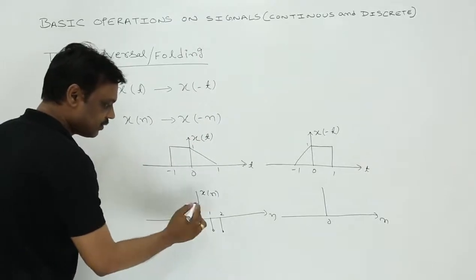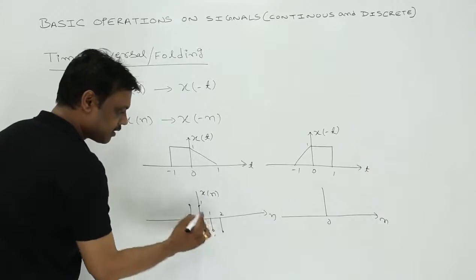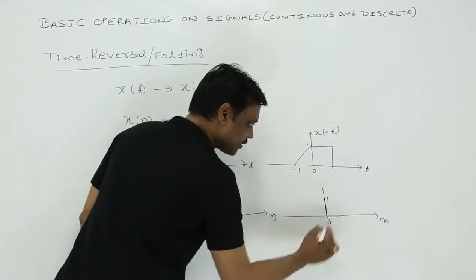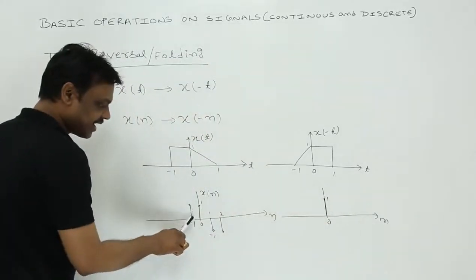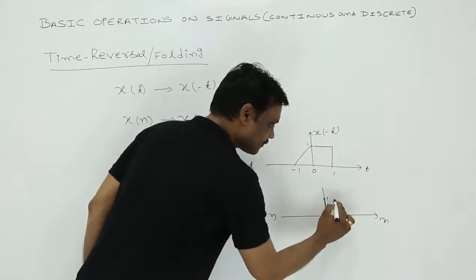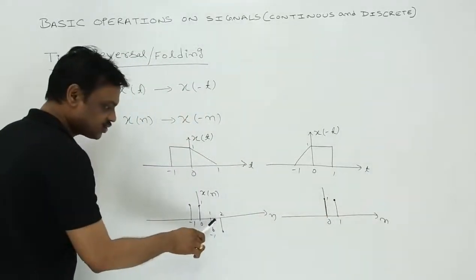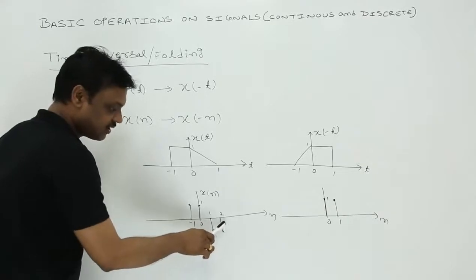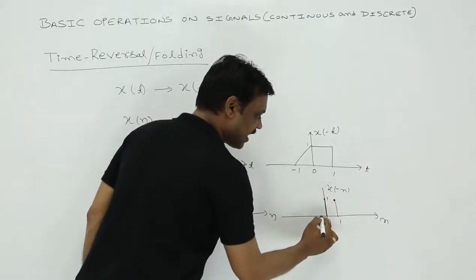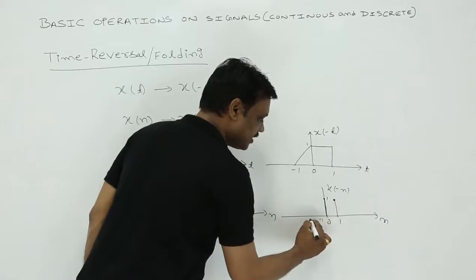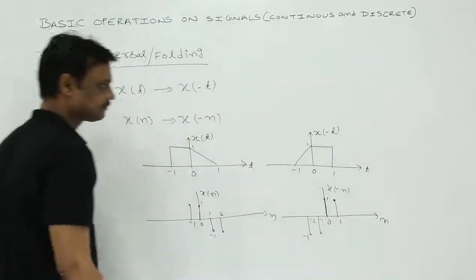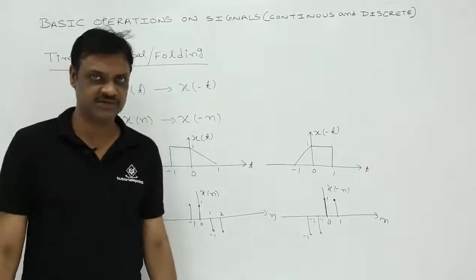At n equal to 0, we have an impulse of 1. So that appears at n equal to 0 only. This value appears at minus 1, and the same value appears at n equal to 1. These two values of minus 1 appear at 1 and 2. Now in x of minus n, these two values appear at n equal to minus 1 and n equal to minus 2. These values are minus 1. This is about time reversal or folding.